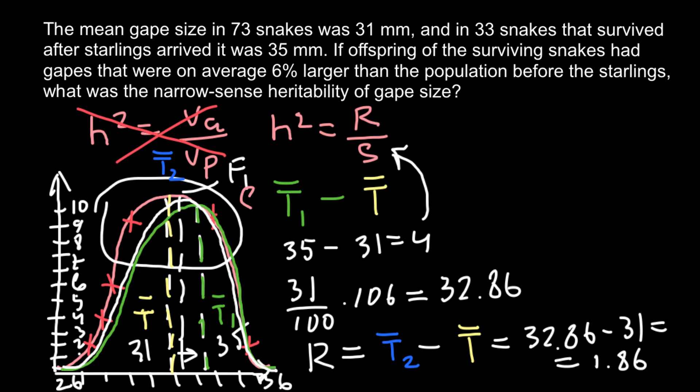And S is selection differential between original population mean and mean of population after selection. So this is also going to be S. And now we have all the numbers. So this is R in our formula.